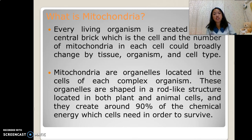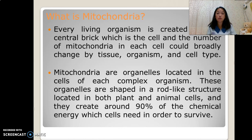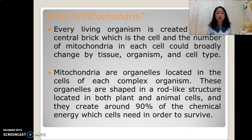What is mitochondria? Every living organism is created with a central brick, which is the cell, and the number of mitochondria in each cell can broadly change by tissue, organism, and cell type. Mitochondria are organelles located in the cells of each complex organism, shaped in a rod-like structure, located in both plant and animal cells. They create around 90% of the chemical energy which cells need in order to survive.